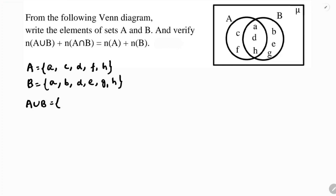Now for A union B — looking at the Venn diagram, we write all the elements. Writing them in order, we get A∪B = {a, b, c, d, e, f, g, h}.